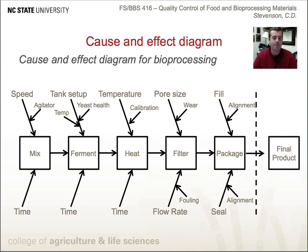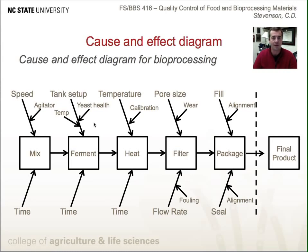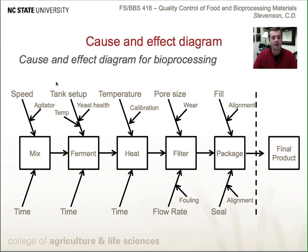Here's a general example of a cause and effect diagram in the bioprocessing industry — a process for brewing beer. The first step is mixing all of the ingredients. Major causes that might lead to an effect could be mixing time or mixing speed, with a minor cause being agitation during mixing. The next step is fermentation, where time or tank setup might be major causes. Minor causes could include fermentation temperature or yeast health — though you might argue yeast health is a major cause.